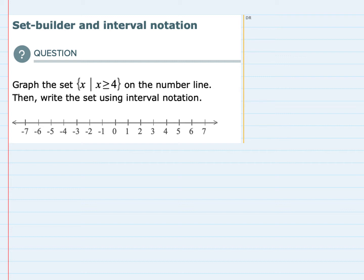We're asked to graph an expression and then write that set using interval notation. So reading the problem, we're asked to graph the set, and the way we would read this is all X's such that X is greater than or equal to 4 on the number line.